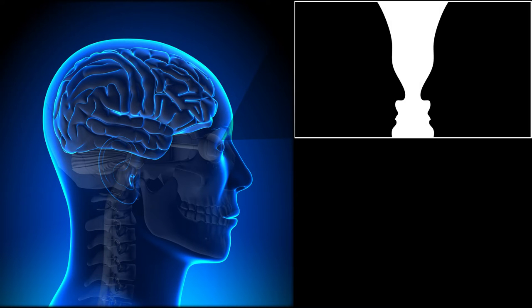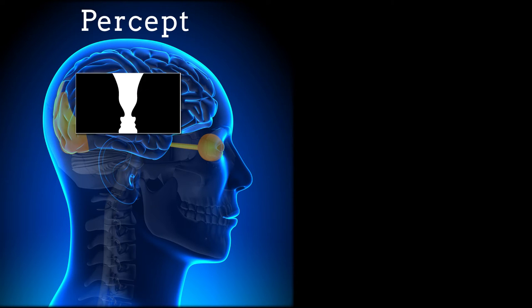When we perceive a stimulus, it is first encoded by our sensory organs and early sensory brain regions. Then, in a process called decoding, our brains interpret the neural signals to create a percept, a mental representation of the stimulus.